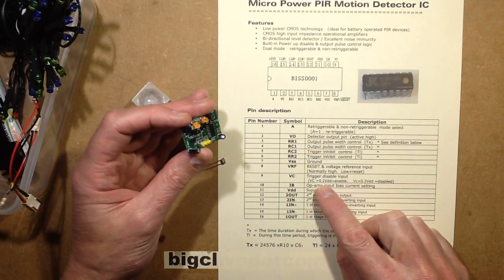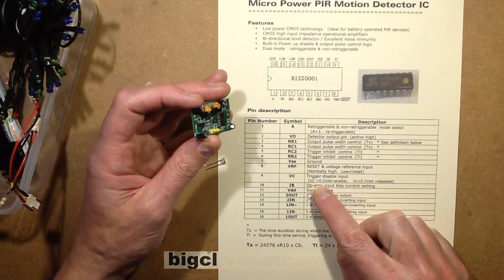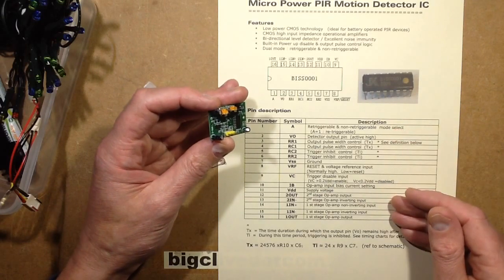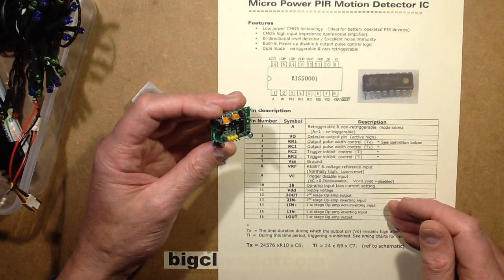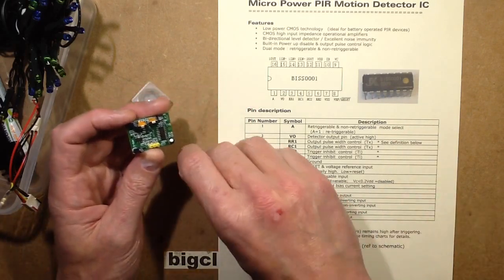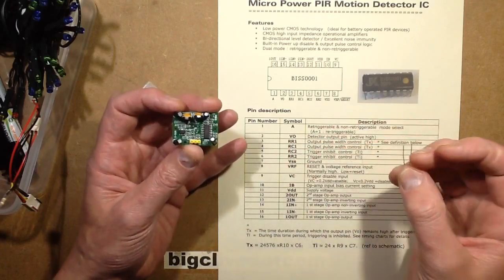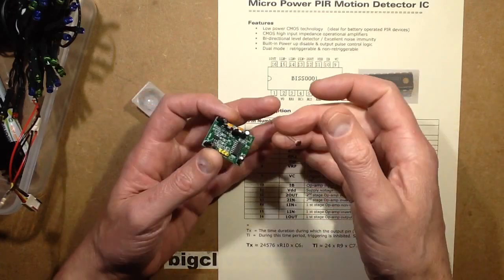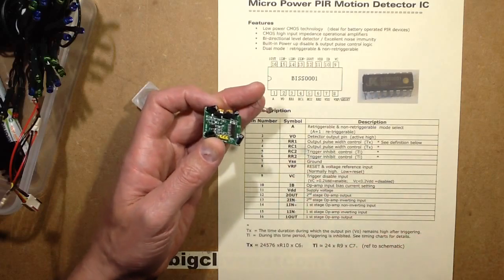So what this LDR does is in daylight it's going to pull that pin down so it is disabled.